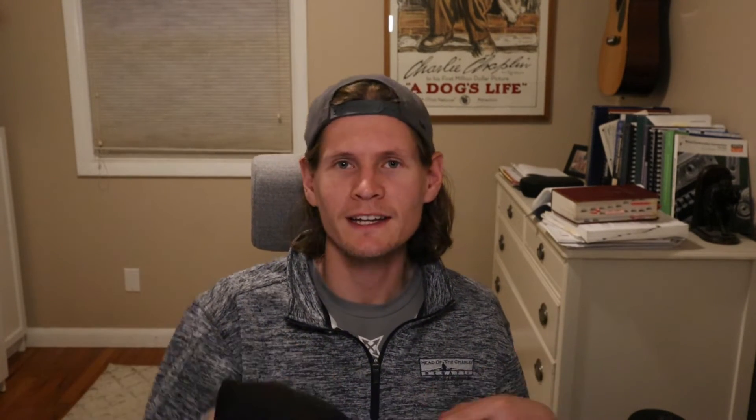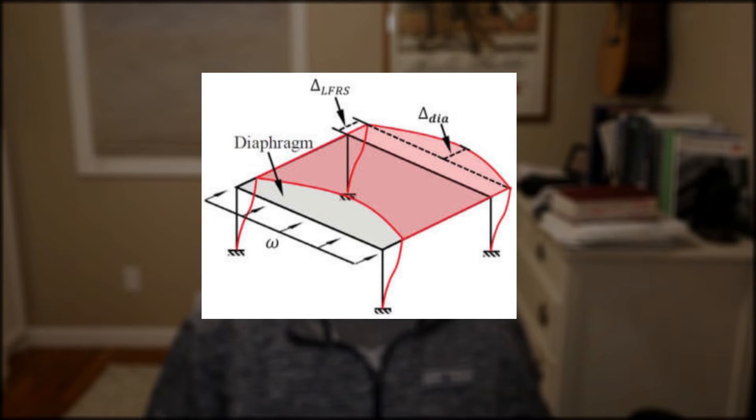This is because it depends on the relative deformation of the shear walls and the diaphragm. And per the 7-16, this is when the midpoint displacement of the diaphragm exceeds two times the average story drift. This is illustrated down below here. You can find it in the code as well to help kind of digest what I just said.